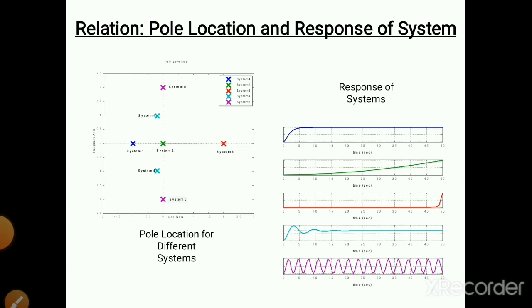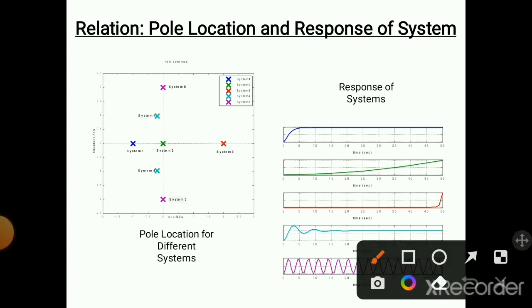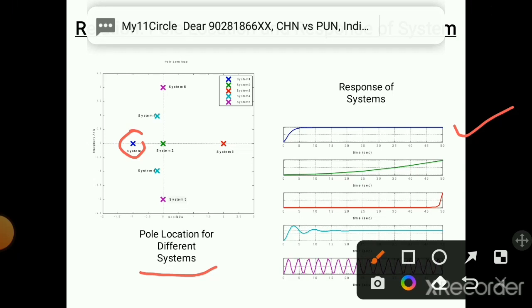Now this is the relationship between pole location and response of the system. When we give some input to the system it provides some response. We have provided different pole locations for different systems. Consider system number 1 — there is only one blue-colored pole. Its response shows a stable output: it has one peak and then provides a stable response.